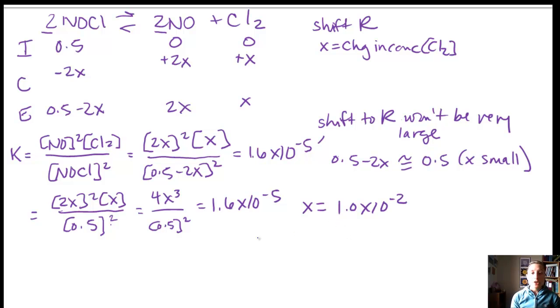So now, let's check our assumption before we move on. Let's check. Let's take our 0.5 minus 2 times 1 times 10 to the negative 2. And that gives us 0.48, which is very close to 0.5. So we're okay with that.